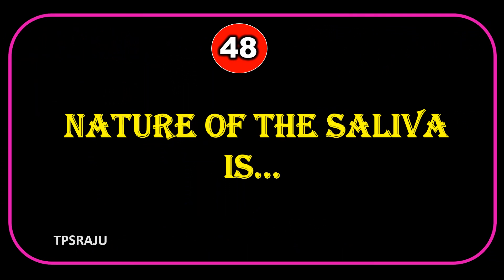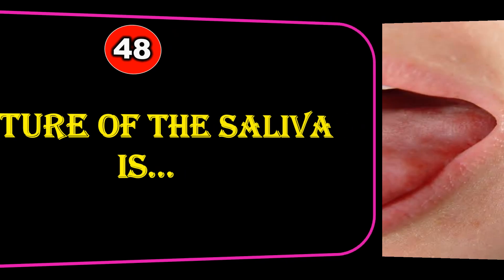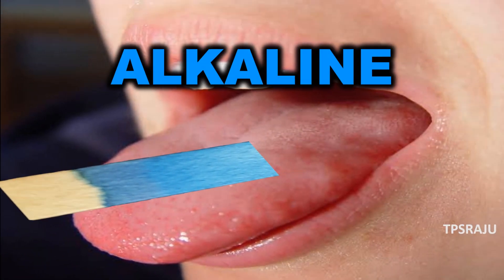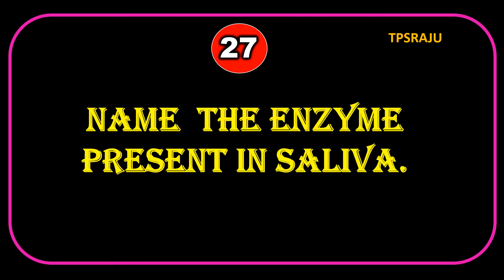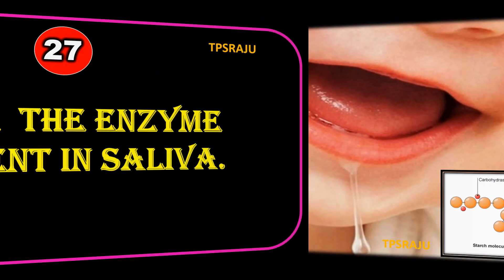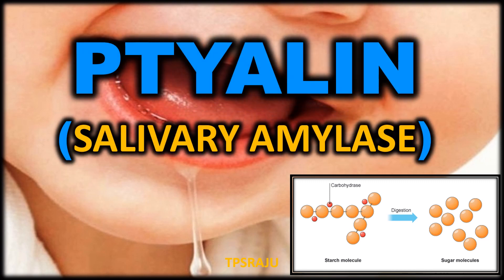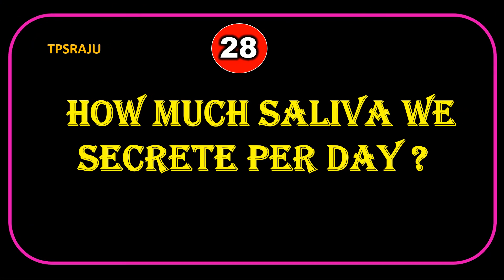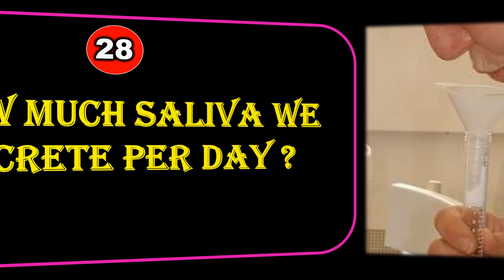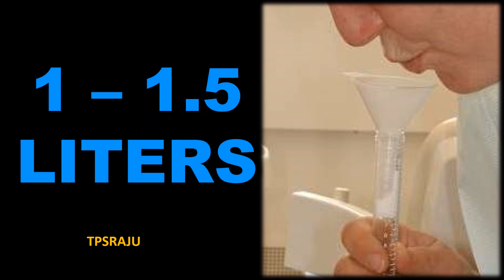The nature of saliva is alkaline. The enzyme present in saliva is salivary amylase (also called ptyalin). We secrete 1 to 1.5 liters of saliva per day.